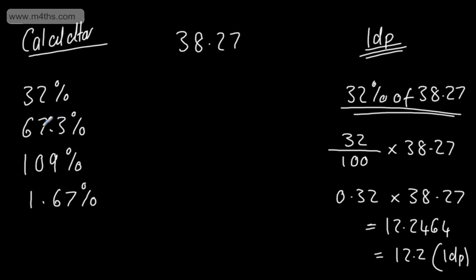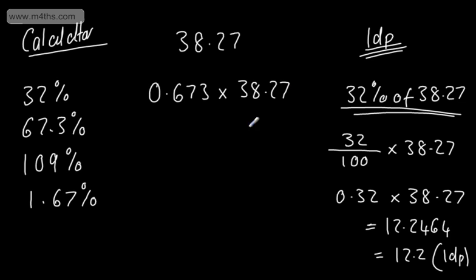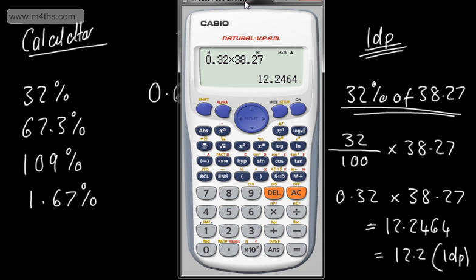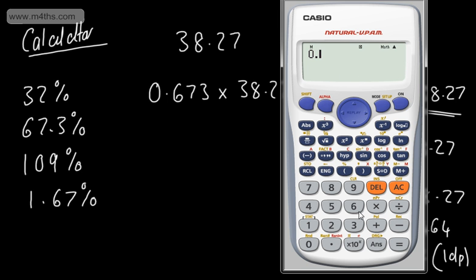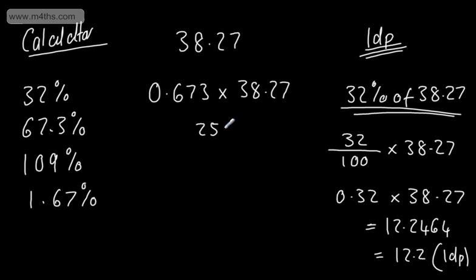For 67.3%, I write the decimal multiplier as 0.673 — or equivalently 673/1000. I multiply 0.673 × 38.27, which gives 25.75..., so 25.8 to 1 decimal place.